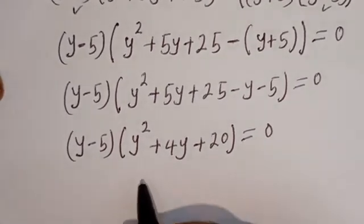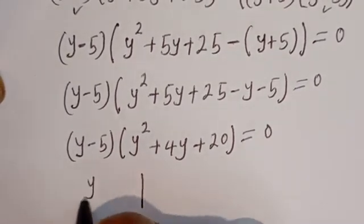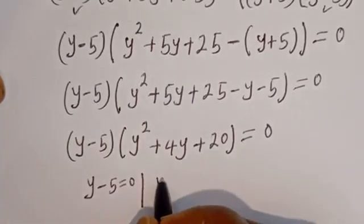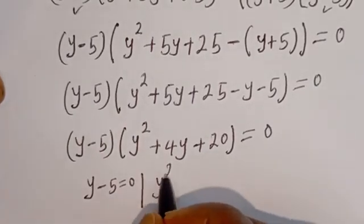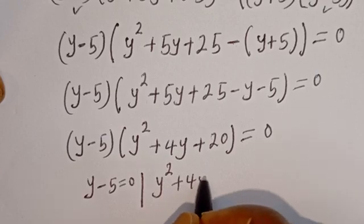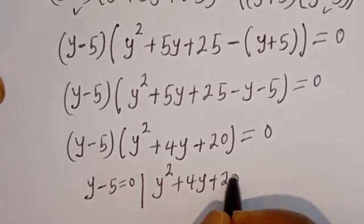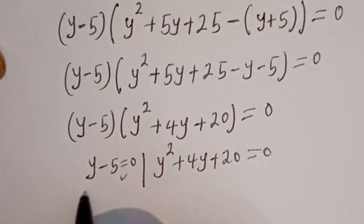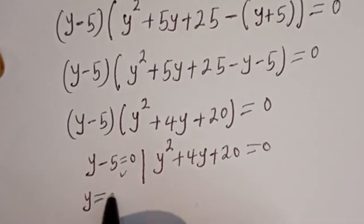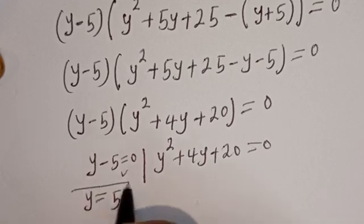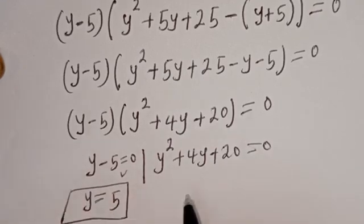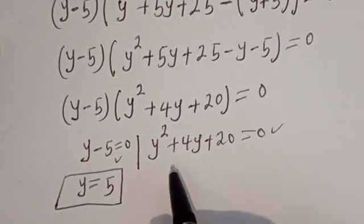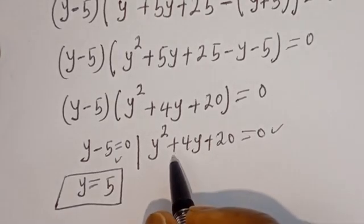There are two cases. The first case is Y minus 5 equals 0, and the second case is Y squared plus 4Y plus 20 equals 0. From the first case, Y is equal to 5 — this is the first value of Y. The second case is a quadratic equation, so let's solve it using the quadratic general formula.